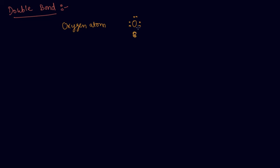Oxygen has six electrons in the outermost shell. The two valence electrons in the outermost shell of one oxygen atom make a bond with the other two valence electrons of another oxygen atom.